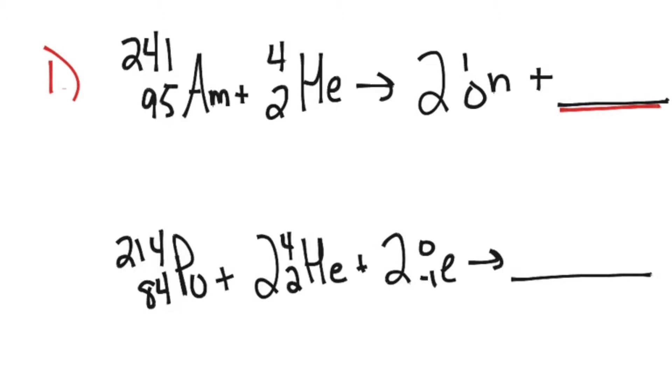So I'm going to do the same thing as we did before, where we've got to make sure the top numbers and the bottom numbers on each side are equivalent. Right now on the left-hand side, I have 241 plus 4, so that gives me a total of 245 on the left-hand side as my top number, and I have 95 and a 2, so that gives me a total of 97 on the left-hand side.